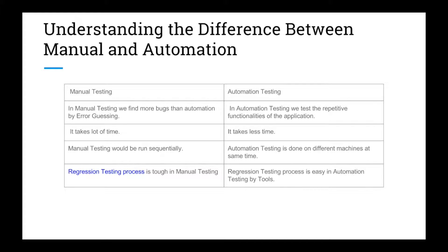We don't want to repeatedly test the same things in manual testing, so we automate them. Manual testing takes more time, whereas automation takes less time because we're using automated tools. Manual testing also runs tests sequentially, while in automation we can run on different machines in parallel. For example, for cross-browser testing we can automate with Selenium, giving us greater test coverage.